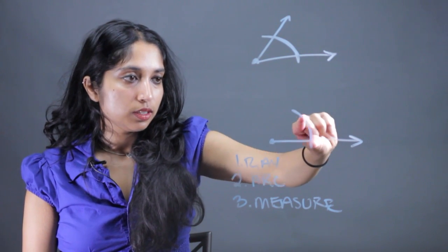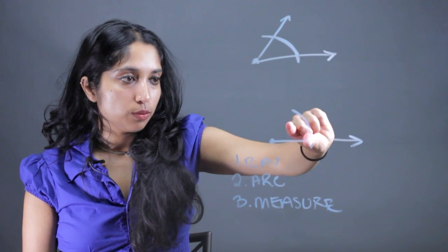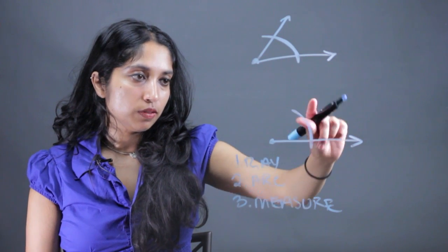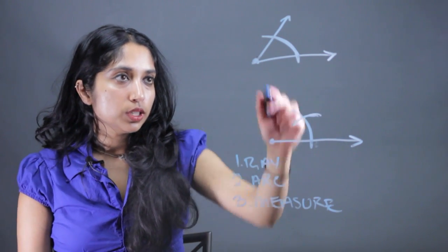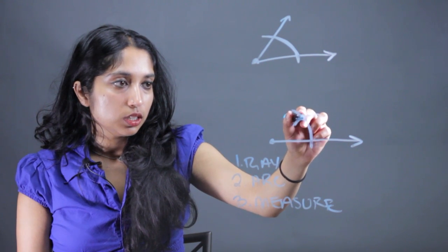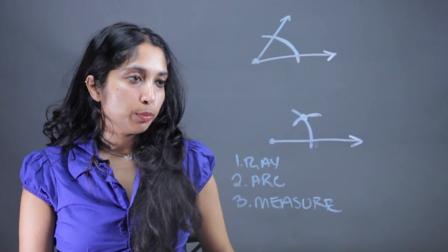And we're going to create that same measurement with how open that arc is. The place where these two intersect is going to give us another point.